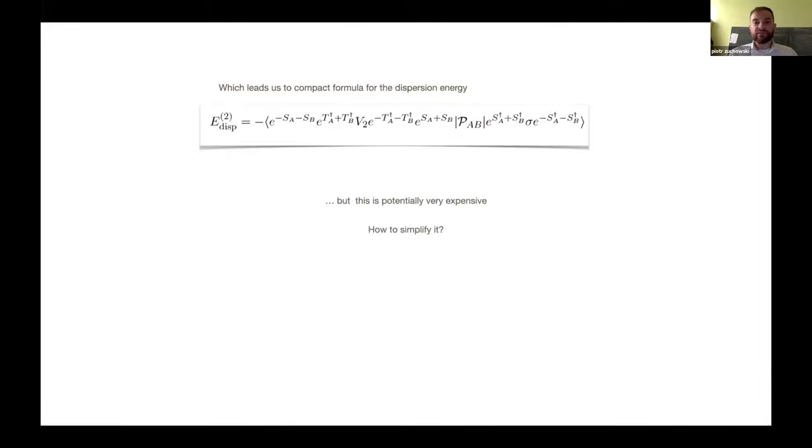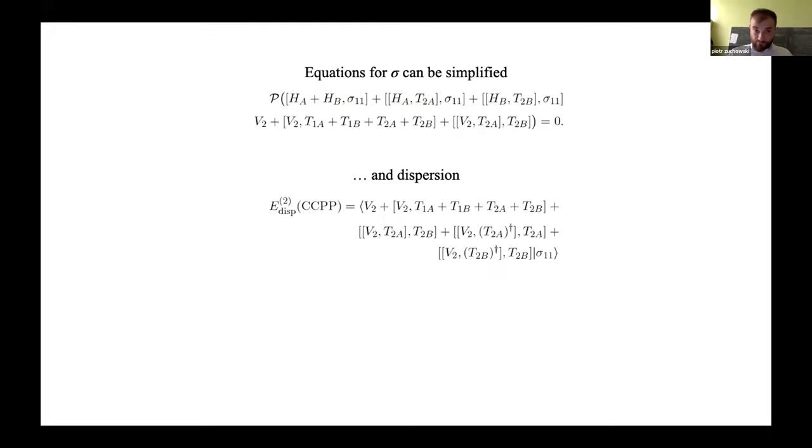But this is potentially very expensive. So, we need to simplify that. And the simplest possibility is to basically truncate sigma operator to only T11, which is one one, which means one excitation on A, one excitation on B. And T is basically... we restrict T to singles and doubles. And it can be shown that S operator, in the very simplest case, is basically T operator.